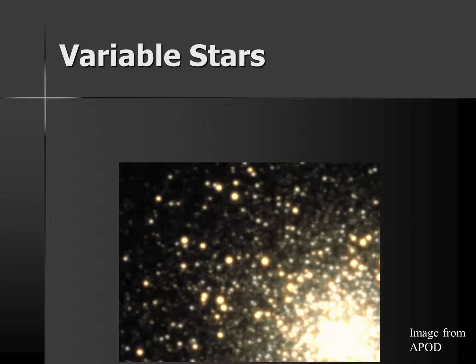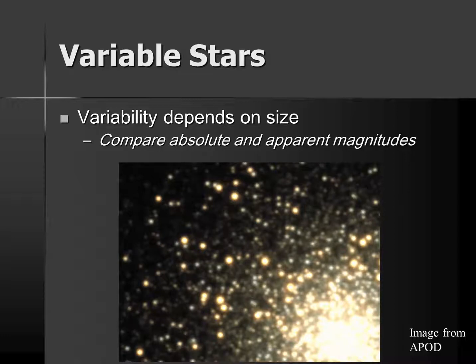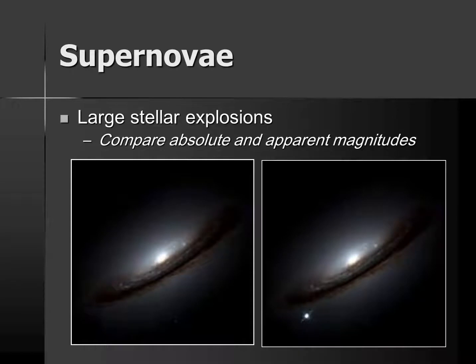Variable stars are another group of stars we can use for comparison. Some stars vary in brightness in regular patterns — their variability depends on size. We compare the period of variability to faraway stars and calculate the distance by comparing absolute and apparent magnitudes. Similarly, we can use the large stellar explosion called a supernova to determine distance to very faraway galaxies. Some supernovae have occurred at known distances, and by measuring the apparent magnitude, we may be able to calculate the distance to a faraway galaxy.